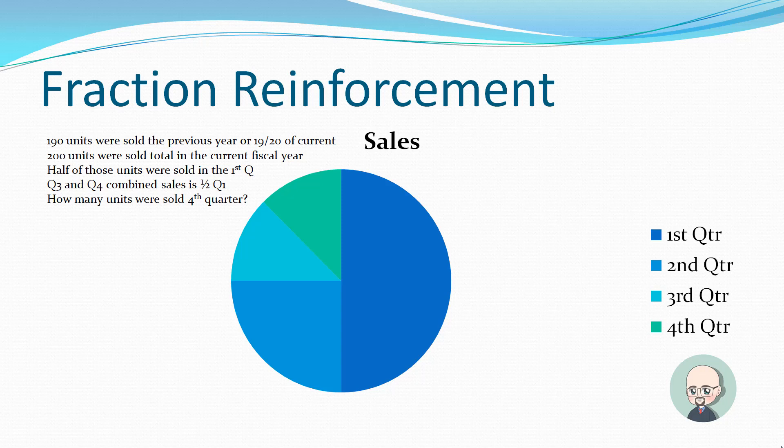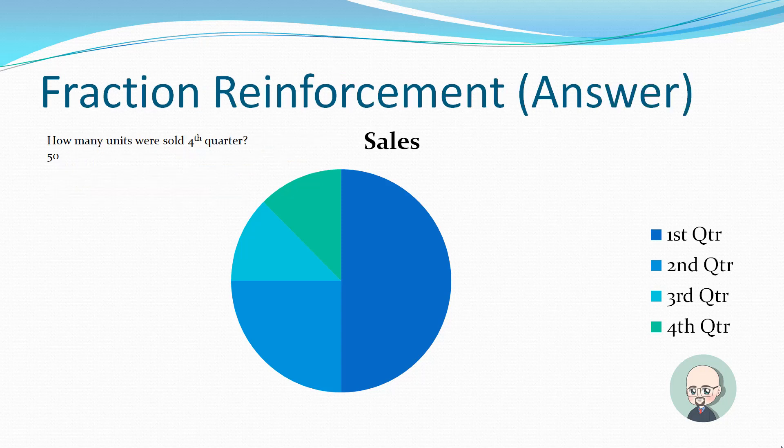So one half of 200 is 100. One half of quarter one, which is quarter three and quarter four combined sales is 50. One half of 50 is 25, which is the total quarter four sales. And that would be one eighth of the total. OK, so that should say 25. OK, and I'll pick this back up in the next lesson and I'll see you there.